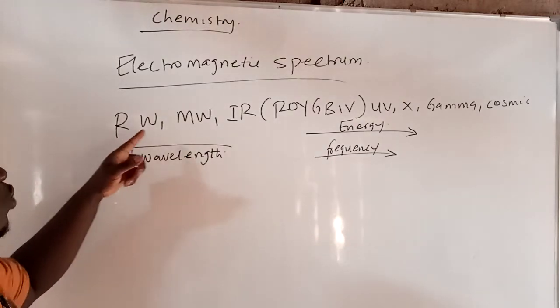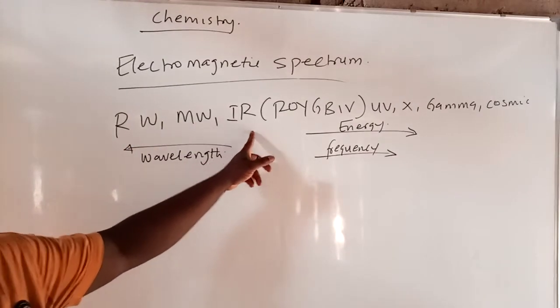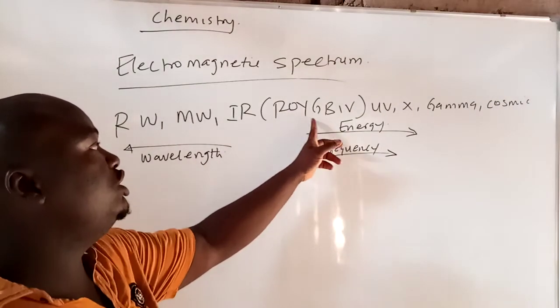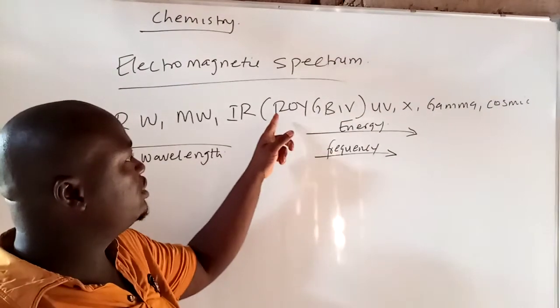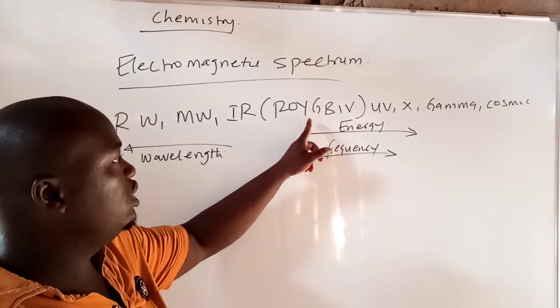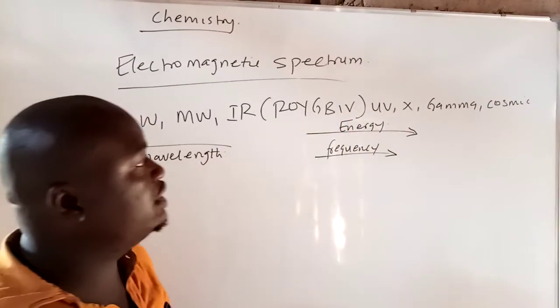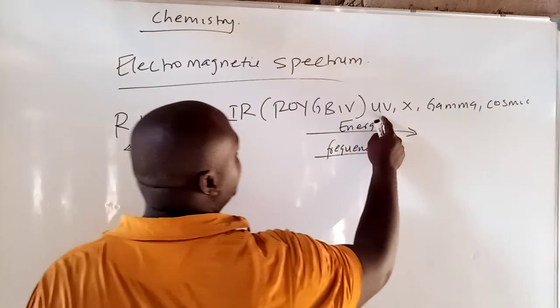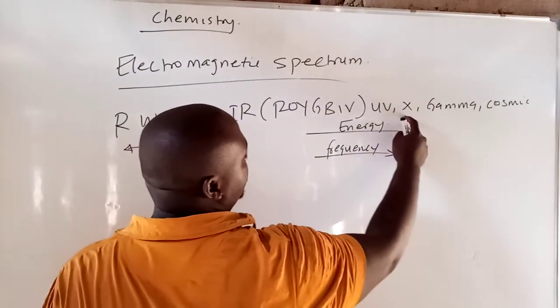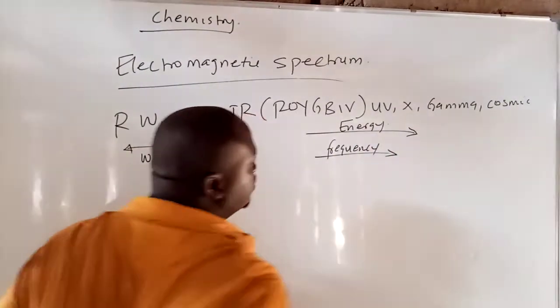Now, this is radio wave, microwave, infrared rays, and then you have what we call the ROYGBIV, which is red, orange, yellow, green, blue, indigo, violet. And then you have the ultraviolet rays, you have the X-ray, gamma rays, and the cosmic radiation.